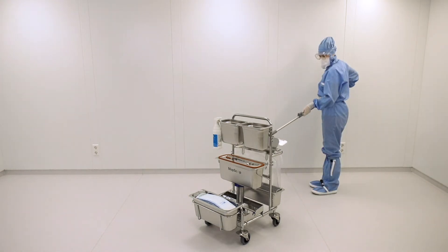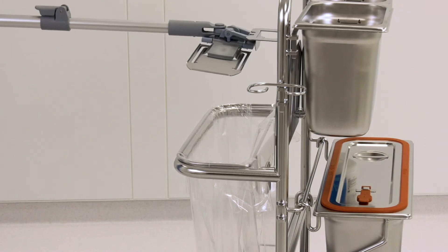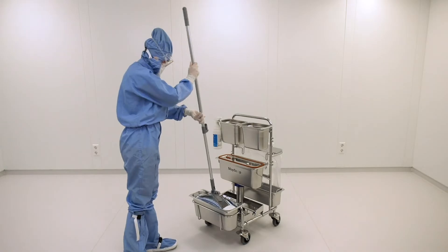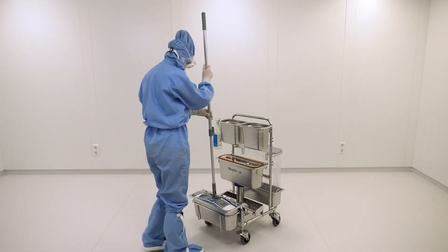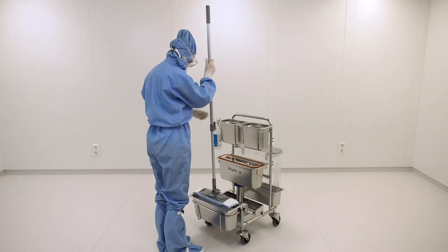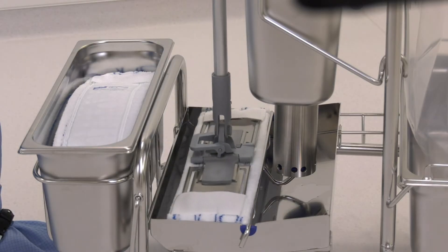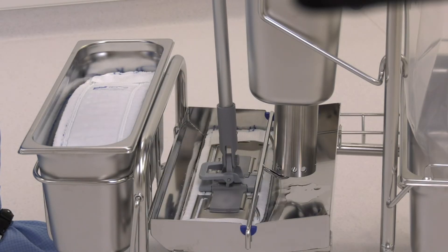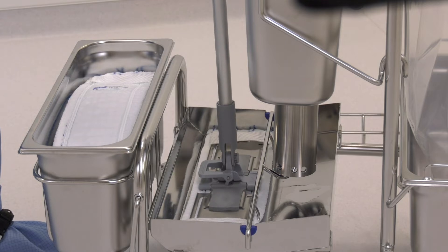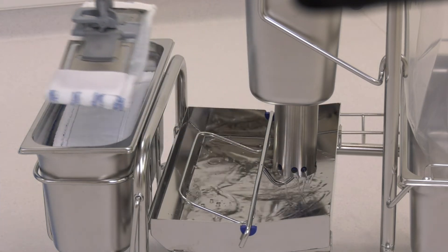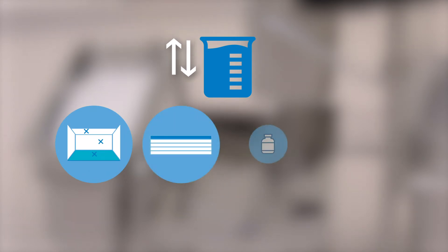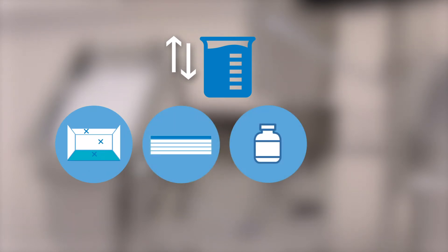Now, open your mop frame touchless to pick up a clean mop cover. To prepare your mop textile for the disinfection process, soak the mop cover with a predefined amount of liquid. In this example, a reusable microfiber mop is soaked with a liquid quantity of 400 milliliters. The quantity you should use always depends on the area of use, textile, chemistry, and floor.